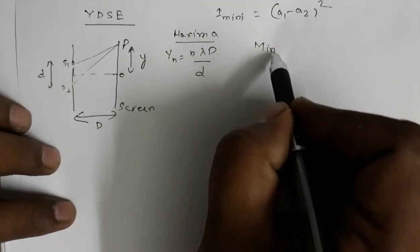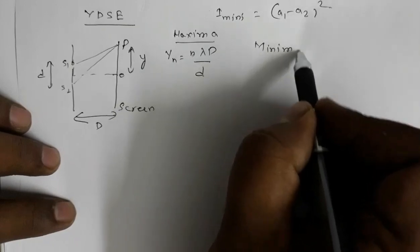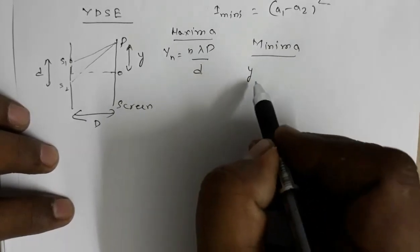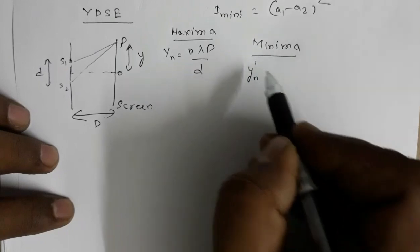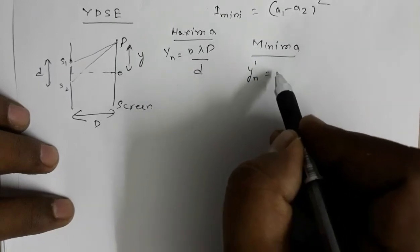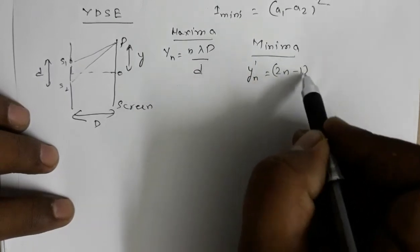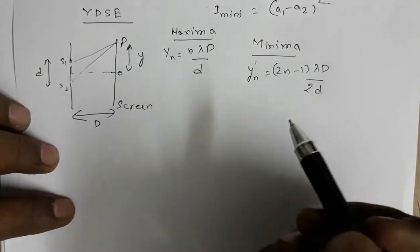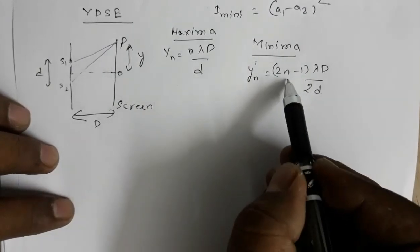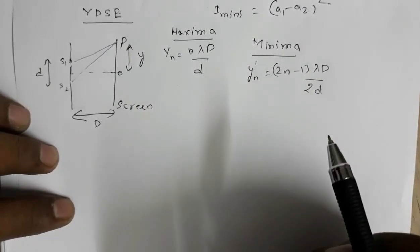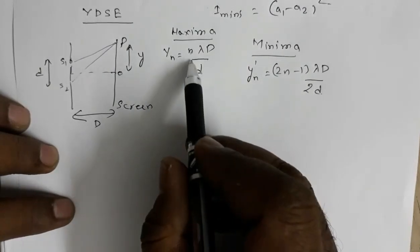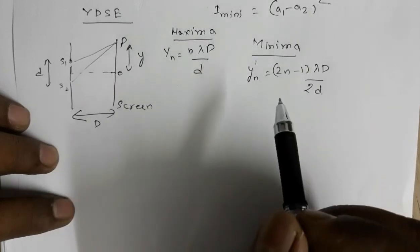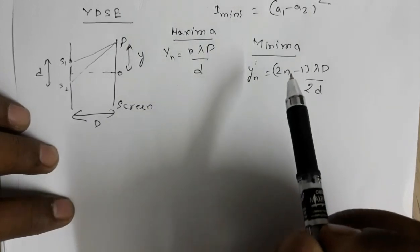For minima or dark fringes, the distance from the center of the screen is: y_n' = (2n−1)λD / 2d, where n = 1, 2, 3, and so on. Note that for bright fringes n starts from 0, as already discussed.